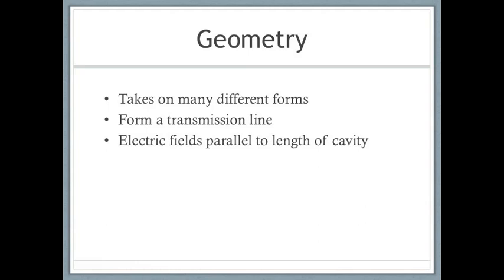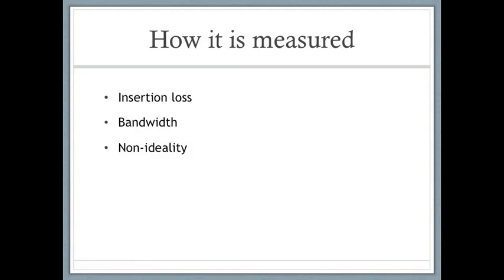In the transmission line model of the cavity, the electric fields always lie parallel to the length of the cavity. A cavity filter must be able to pass the desirable signal with minimum loss, and must reduce or eliminate undesirable signals with maximum efficiency. In an ideal filter, there would be no loss, but in practice there is insertion loss — essentially how much filtering you get from your cavity filter. The bandwidth of the cavity filter is the range of frequencies it allows through; low insertion loss results in a wide bandwidth.